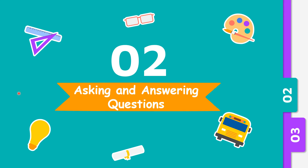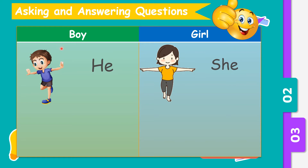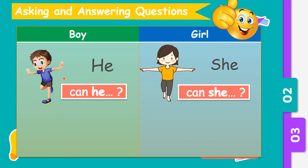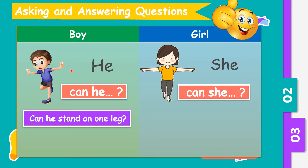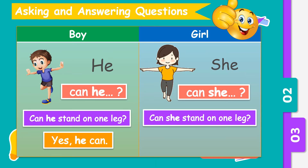Now we are going to revise how to ask and answer questions. When you see a boy, we use the word 'he'. When you see a girl, we use the word 'she'. When you want to ask questions, we always start with 'can' — 'Can he' or 'Can she'. Now let's look at the boy. Can he stand on one leg? The answer is yes, he can. What about the girl? Can she stand on one leg? The answer is yes, she can.